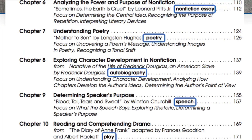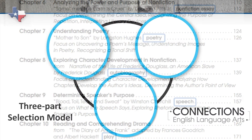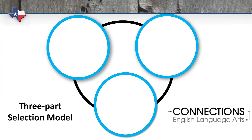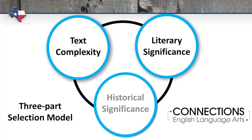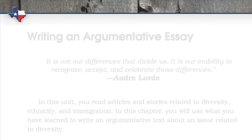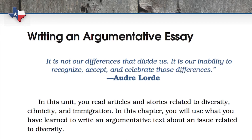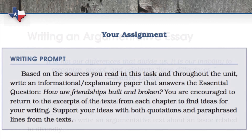Pursuant to the new TEKS' multi-genre requirement, the selections chosen for Connections represent a blend of fiction and informational techniques. Each selection was evaluated with a three-part model for measuring text complexity as well as its literary and historical significance. Following the five chapters in a unit, there is a full essay writing process using the theme and passages in a given unit.